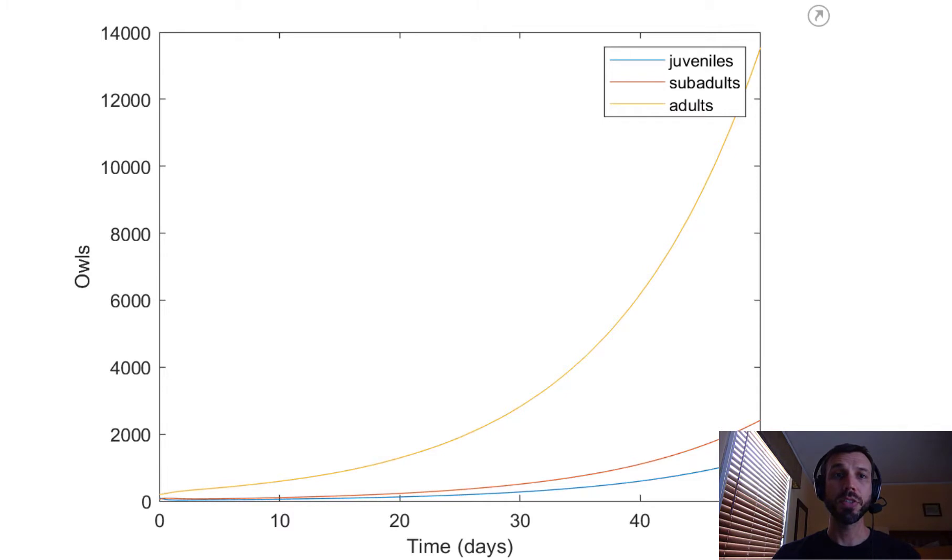As you increase to systems with more than three variables, the eigenvalues still give you similar amounts of information, and we're going to see that next class when we look at systems of two masses connected with springs to each other and to the sides of a track.